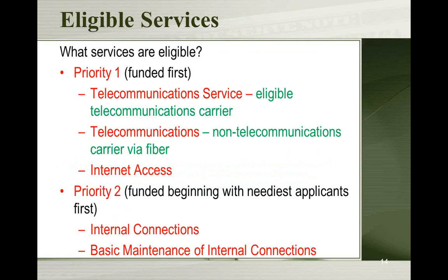All services are arranged by priority — Priority 1 and Priority 2. Priority 1 is basically your basic phone and internet access: your local phone number, long distance, fax, cell phone service the library provides. Under internet access there's your monthly internet bill and anything associated with that. These are the services most Nebraska libraries apply for, and they get funded first.